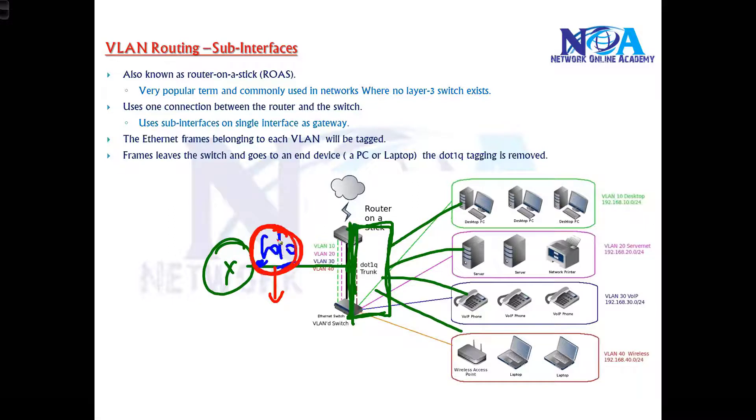So probably one interface is sufficient, but the question is how is it sufficient? Because how we can make this one single physical interface as a gateway for multiple VLANs? So what we'll be doing is we are going to create something called logical interfaces, and we call them as sub-interfaces.